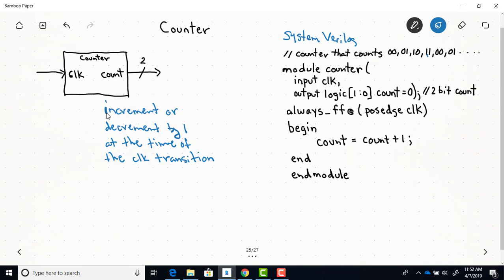Now, if we wanted a down counter, all we would have to do is just change this plus sign here to minus. And now it would decrement every time, the count would decrement every time there's a rising edge of the clock.